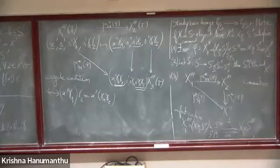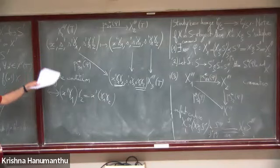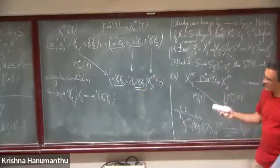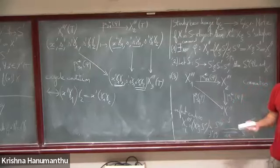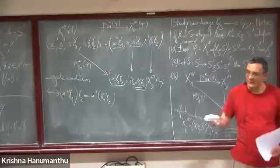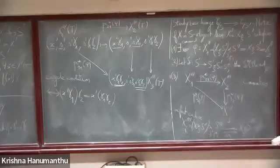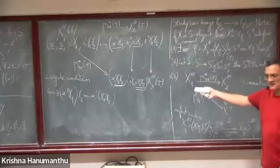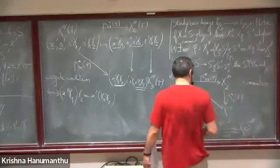Grothendieck wanted to generalize this: Galois descent existed already at that time, and one knew how to descend along Galois extensions of fields. Grothendieck wanted to descend using more general base changes and so he invented this notion of descent datum, which comes directly from the notion of Galois descent.